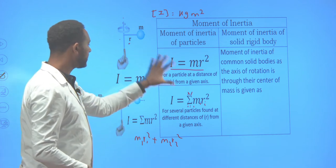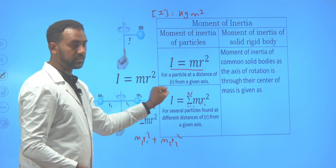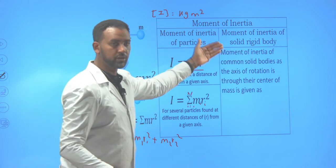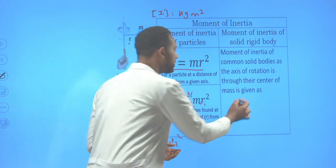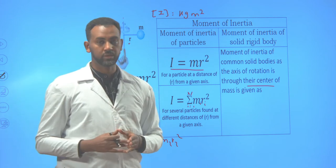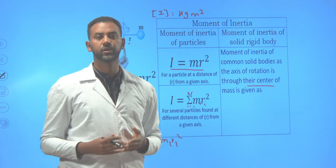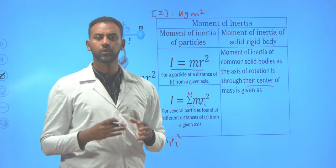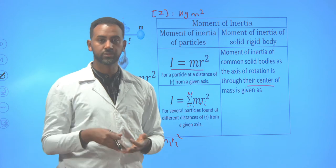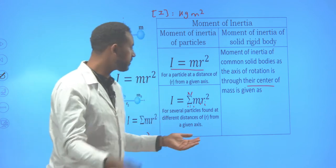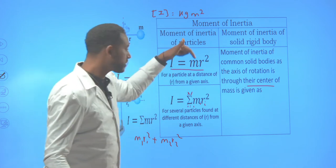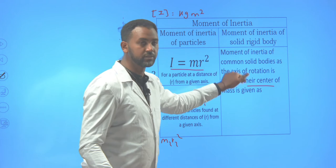This is how we determine the moment of inertia of a particle system. The moment of inertia of solid body systems, or rigid body systems, as the axis of rotation is through their center, is already provided in standard physics books. You can find the moment of inertia of a sphere, disc, hoop, cylinder, and a bar. We mainly focus on the case where the axis of rotation is through the center.